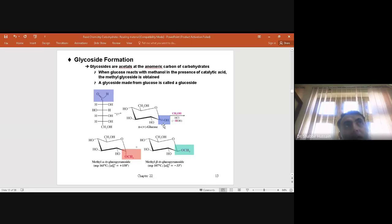In the presence of acid, when methanol reacts with glucose, glycosides are formed as acetals at the anomeric carbon of the carbohydrate. When glucose reacts with methanol in the presence of a catalytic amount of acid, methyl glycoside is obtained.